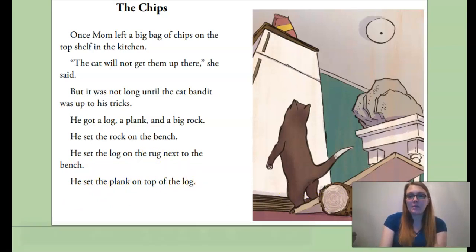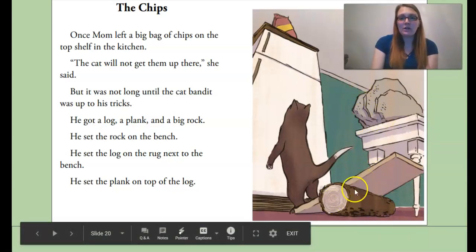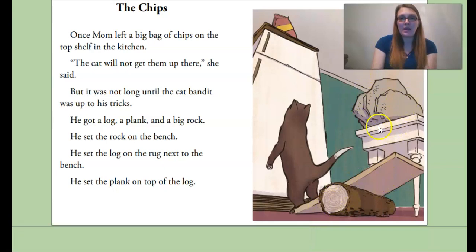So if you look in the picture of the story, you have the log on the floor. There's the plank resting on the log, and the big rock is on the bench. You can see the cat is looking up at the big bag of chips. So maybe you can make a prediction now. What do you think he's going to do? He's up to his tricks. He's always trying to get the food. So what might this cat be doing?